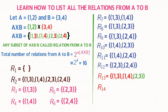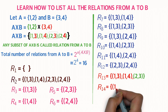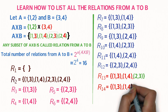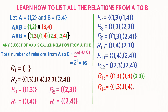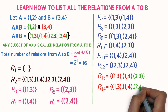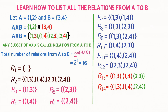R14, the fourteenth relation: again take the first two elements — ordered pair (1,3) and ordered pair (1,4). Moving right, the next element is ordered pair (2,3), which was already written in R13. So the next immediate element is ordered pair (2,4). Therefore R14 equals the set containing ordered pair (1,3), ordered pair (1,4), and ordered pair (2,4).